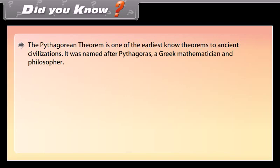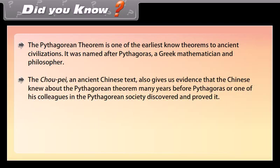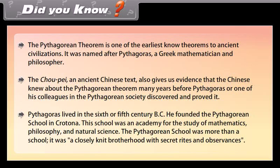Did you know? The Pythagorean theorem is one of the earliest known theorems to ancient civilizations. It was named after Pythagoras, a Greek mathematician and philosopher. The Chaopei, an ancient Chinese text, also gives evidence that the Chinese knew about the Pythagorean theorem many years before Pythagoras discovered and proved it. Pythagoras lived in the 6th or 5th century BC and founded the Pythagorean school in Crotona, an academy for the study of mathematics, philosophy, and natural science. The school was more than an academy — it was a closely knit brotherhood with secret rites and observances.